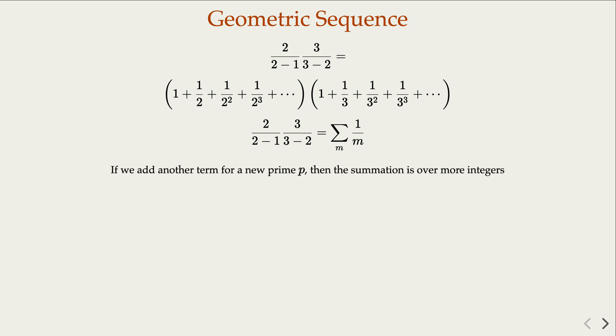In other words, if we add another term for prime number p, a new prime number, then the right hand side summation is over more integers. And the left hand side, you add one more term—p over p minus 1. So what if we try to do that for all the prime numbers that we know of?